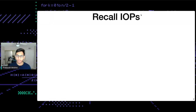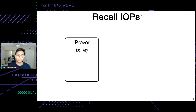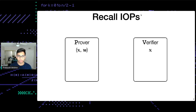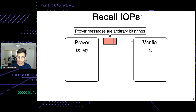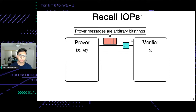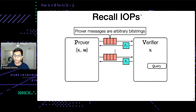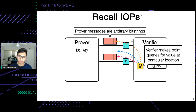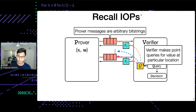Before we dive into our construction, let's quickly recall IOPs from Ali's talk. In this model, you have a prover and a verifier. The prover has the public input and the witness, and the verifier has just the public input. The prover and verifier exchange some messages — the prover's messages are some arbitrary bit strings, oracles, and the verifier's messages are just some randomness.